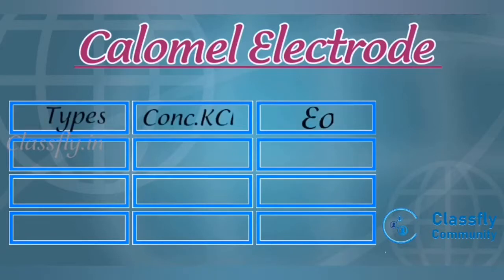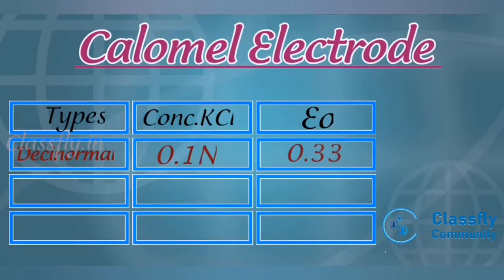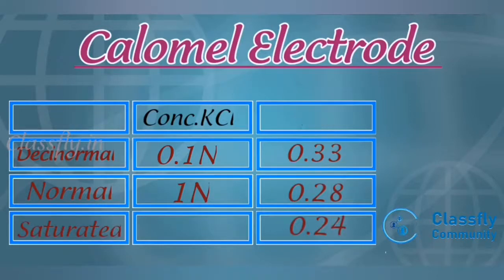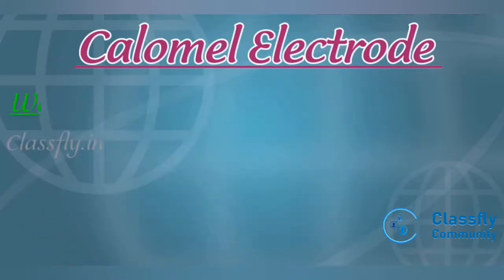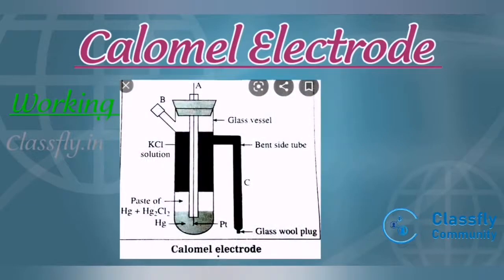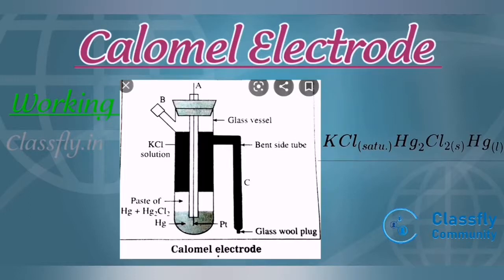Depending on the concentration of potassium chloride used, there are three types of calomel electrode: first, the 0.1 N calomel electrode; second, the normal (1 N) calomel electrode; and third, the saturated calomel electrode. The calomel electrode is represented as: KCl (saturated) | Hg₂Cl₂ (solid) | Hg (liquid).